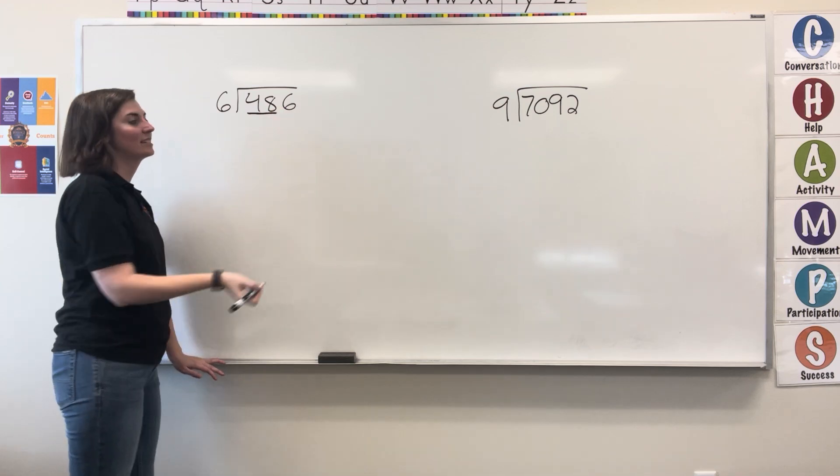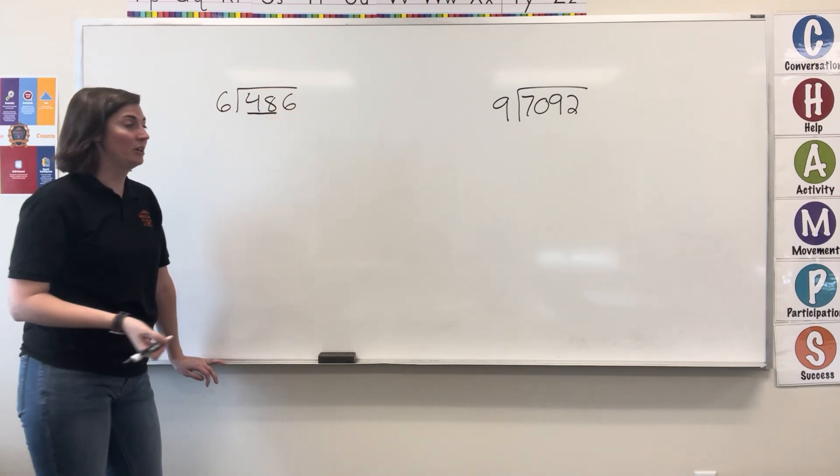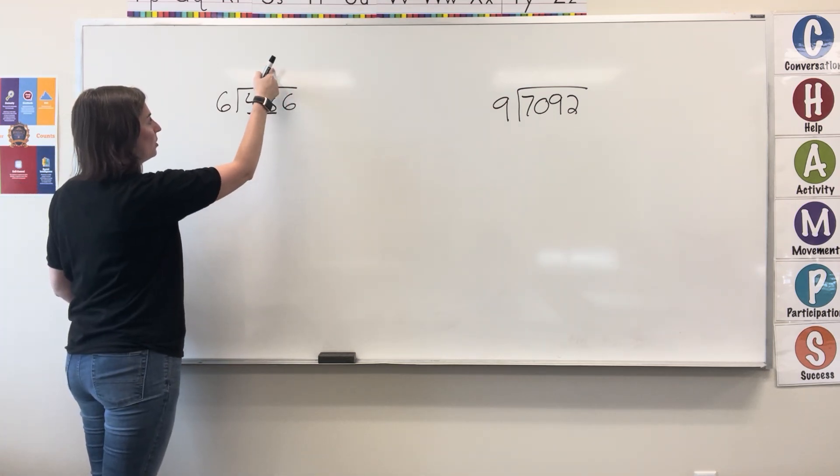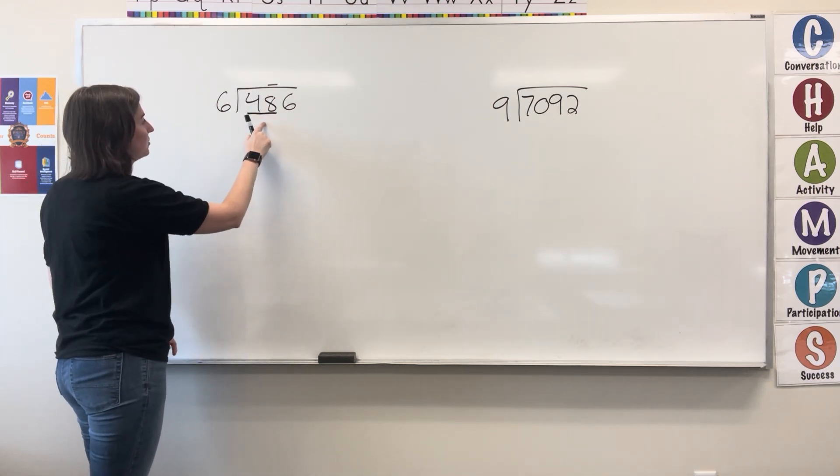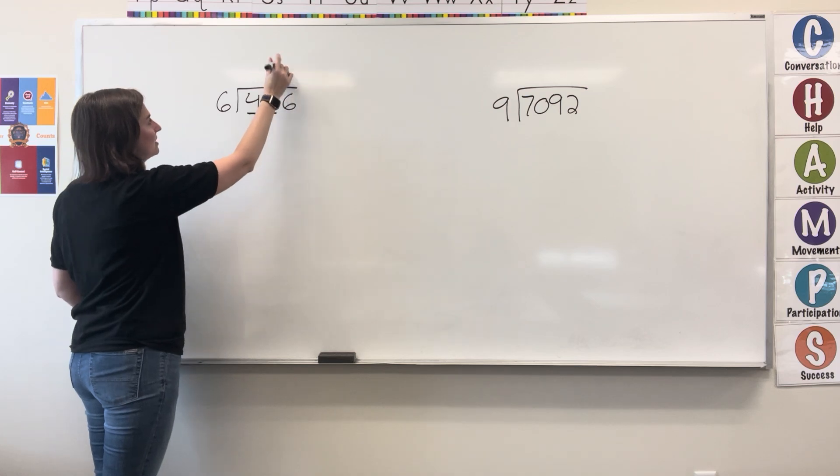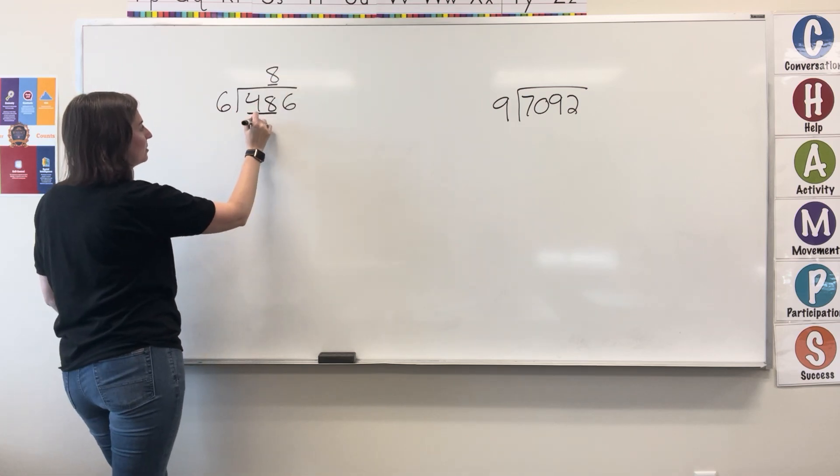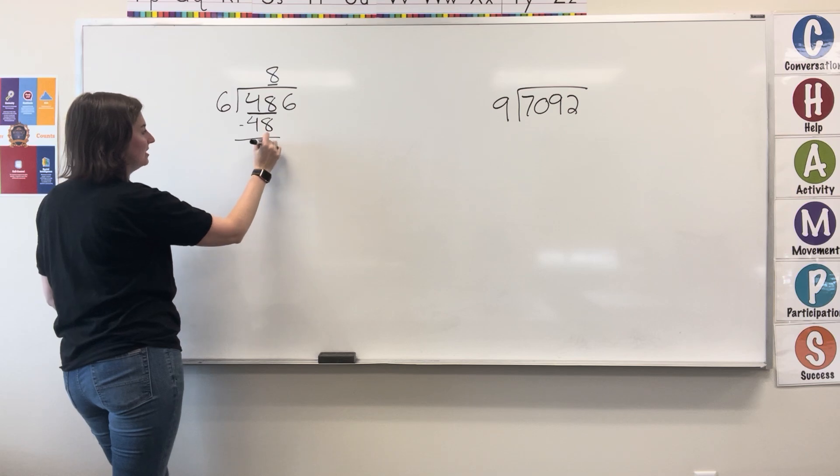Let's check 48. 6 does fit into 48, so I'm going to mark where my quotient is going to start, and then I'm going to start dividing. 6 goes into 48 8 times. 8 times 6 equals 48. Subtract, and I get 0.